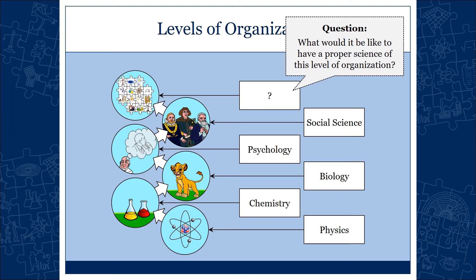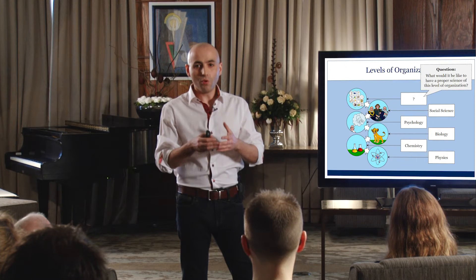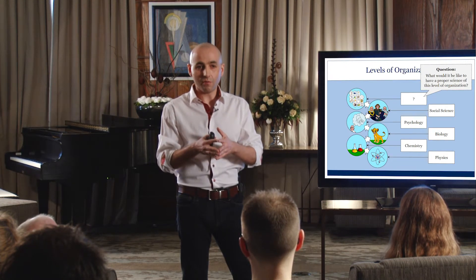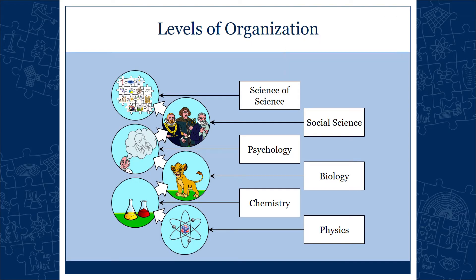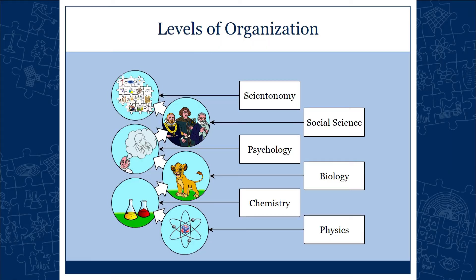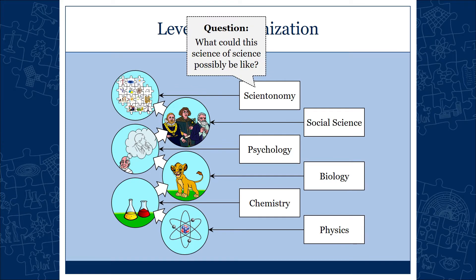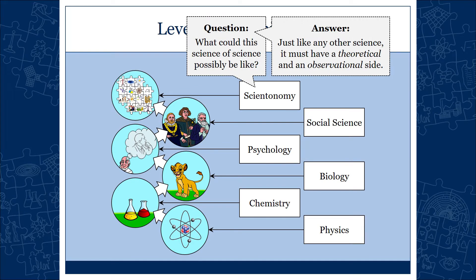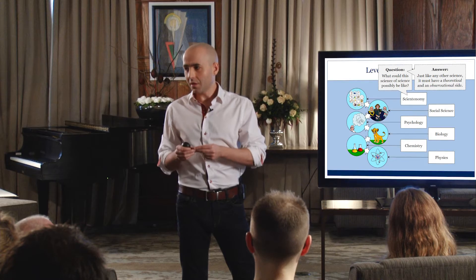So my question is: what would it be like to have a proper science of this level of organization? If it is a level of organization that shows certain general patterns of behavior — which we believe it does — then shouldn't we have a proper science about it? For lack of a better term, we're going to call it scientonomy. I apologize, but scientology is already taken, so there's nothing we can do about it.